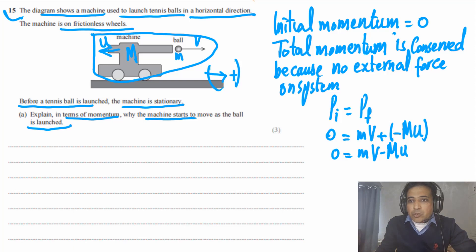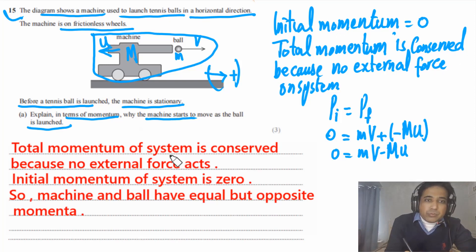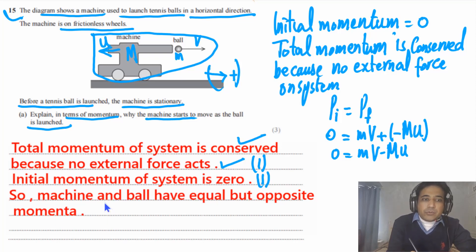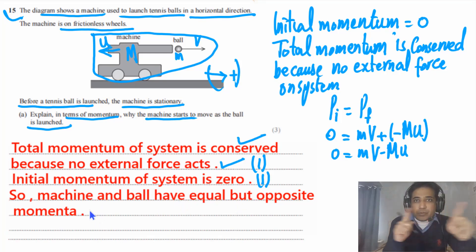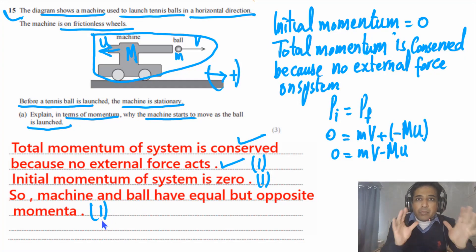This is how to write down your answer. For the first mark: total momentum of the system is conserved because no external force acts on the system. For the second mark: initial momentum of the system is zero. For the third mark: the machine and ball have equal but opposite momenta, so they move in opposite directions. That gives you three marks.